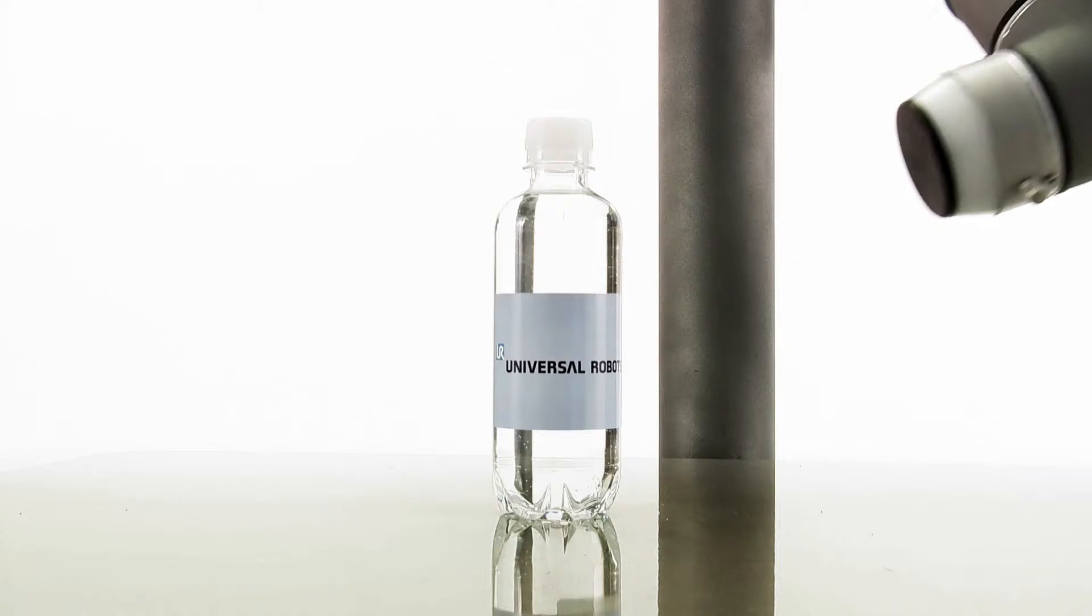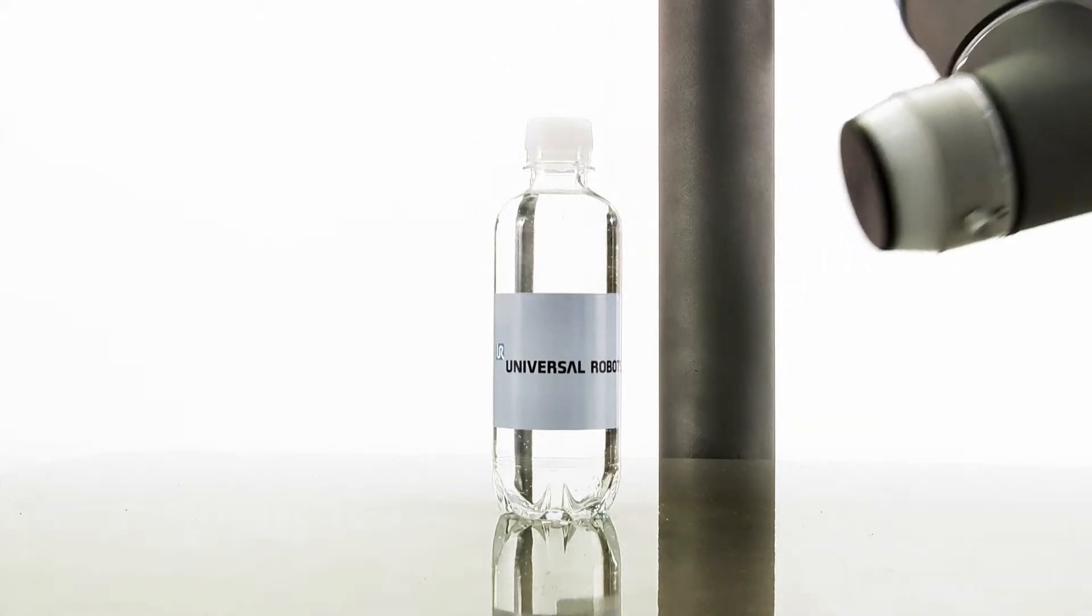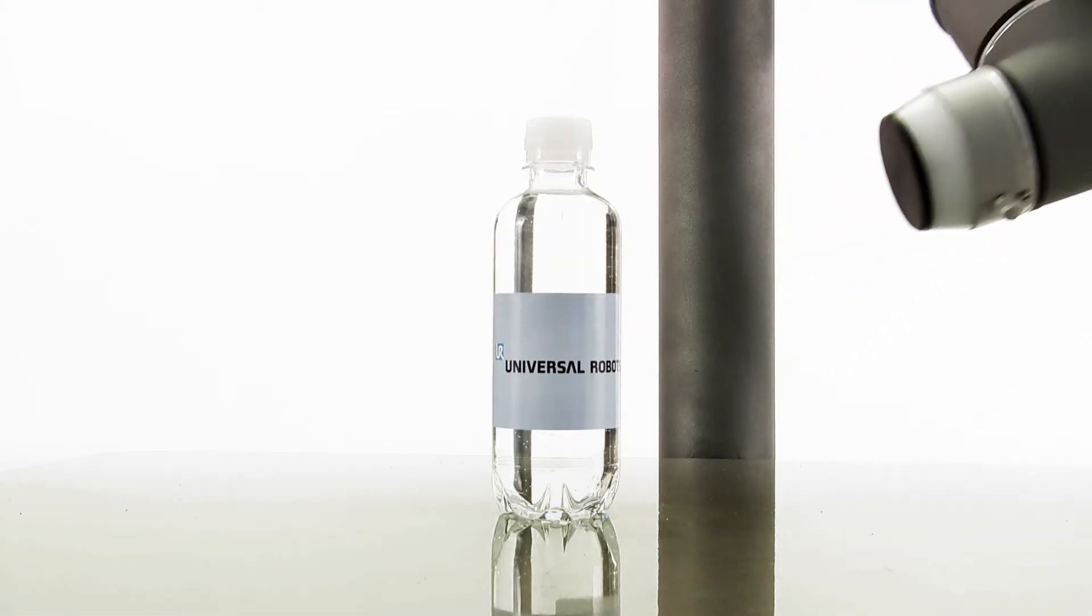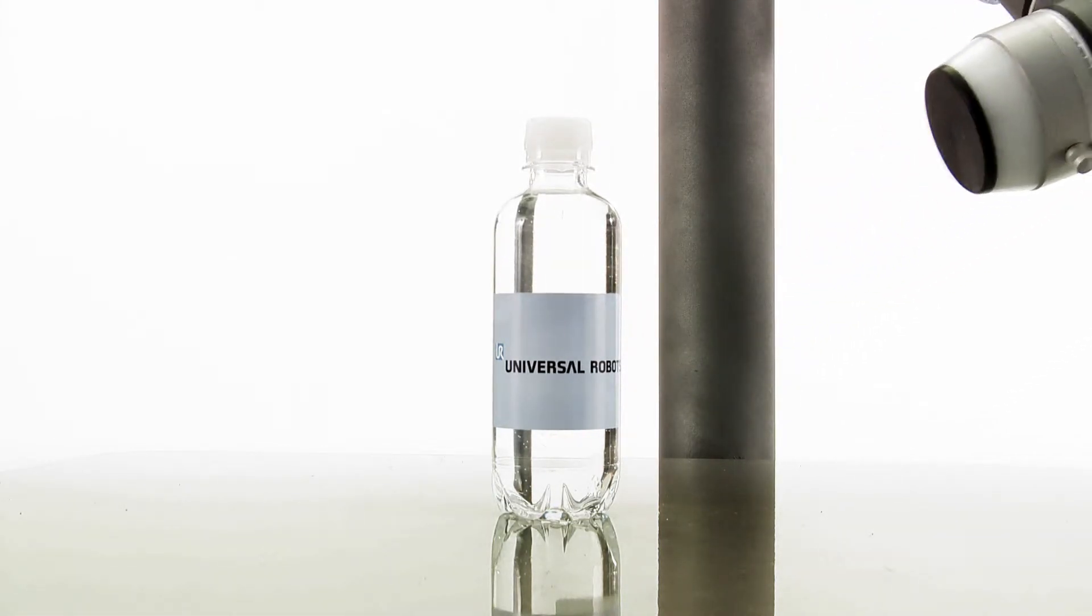The robots pay attention to detail. Utilizing their six axis joints, Universal Robots can handle even the tiniest parts in production processes not practical for manual labor.